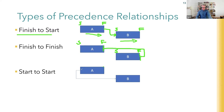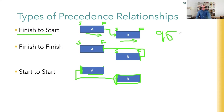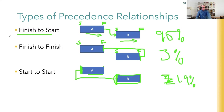The other common relationship is start-to-start, which means activity B can't start until activity A starts. A simple example: in house building, activity A could be laying the foundation and activity B could be erecting the framework. You don't have to wait for all the foundation to be laid - once the foundation has started and done a little work, you can start the framework too. Roughly 95% of everything you do will be finish-to-start, about 3% finish-to-finish, and about 2% start-to-start.